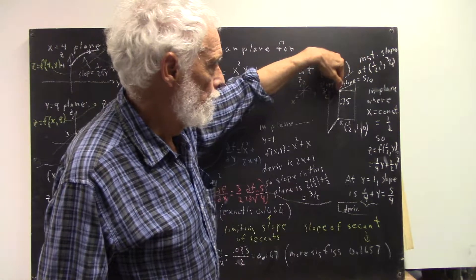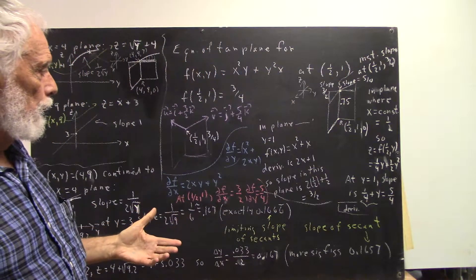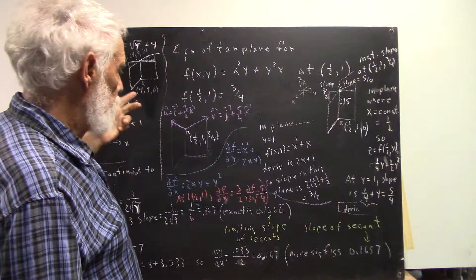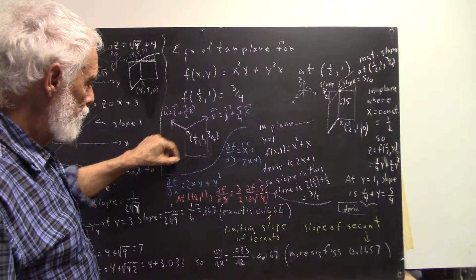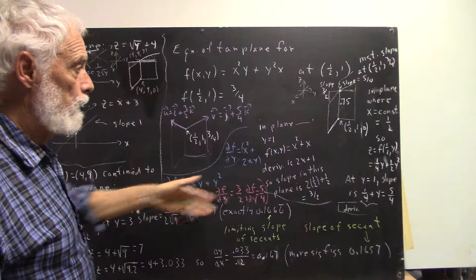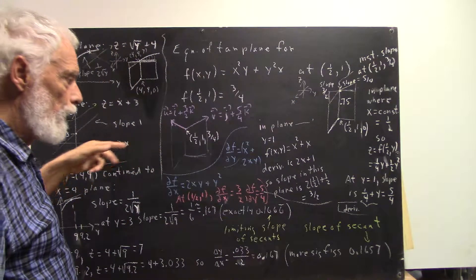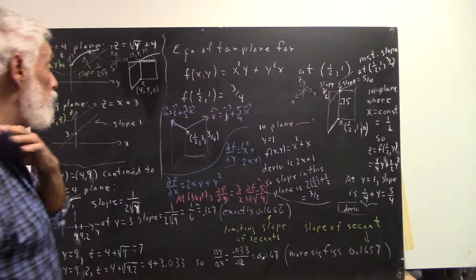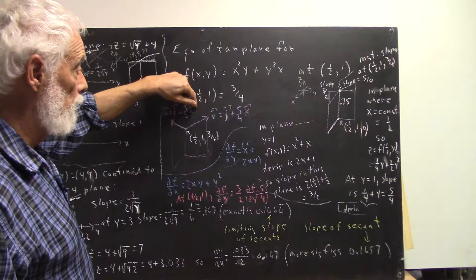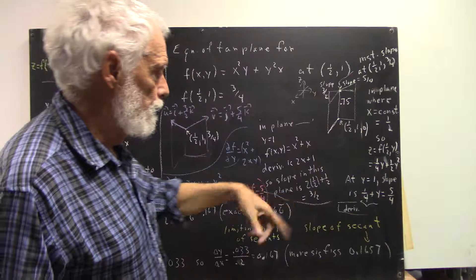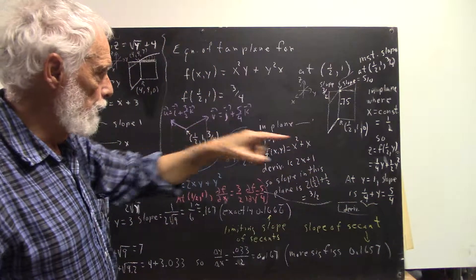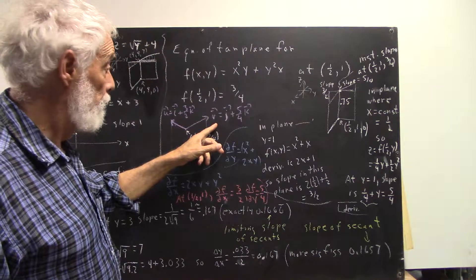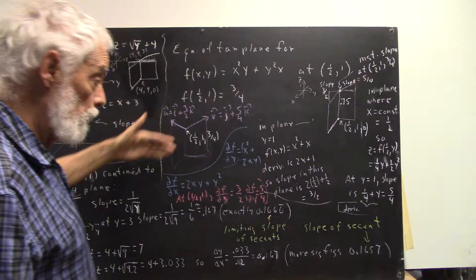Having obtained these slopes and this point, we easily get the tangent lines. Now we find the normal vectors. The vector u is in the plane parallel to the xz-plane with slope 3/2: moving one unit in the i direction requires going up 3/2 units, so u = i + (3/2)k. Similarly, vector v corresponds to slope 5/4: one unit in the j direction and 5/4 in the k direction. With two vectors and a point, we can find a normal and then a plane.